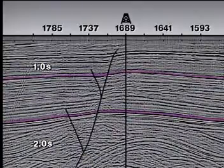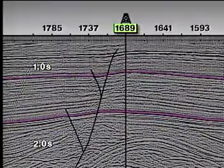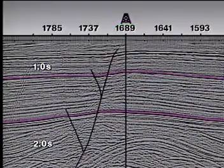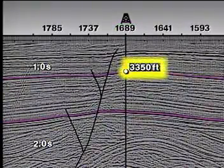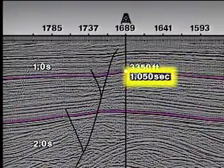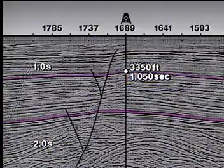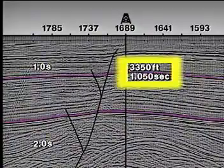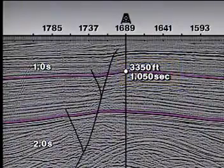For example, consider this interpreted seismic section with a well at shot point 1689. From a synthetic seismogram, we correlate a well depth of 3,350 feet to the shallow horizon, with a seismic reflection time of 1.050 seconds at this location. Given these data, what is the average velocity to the shallow horizon?